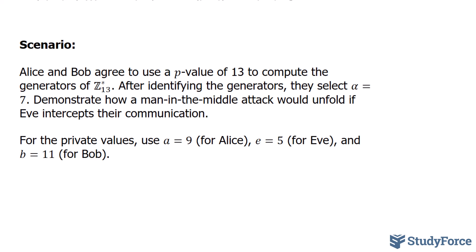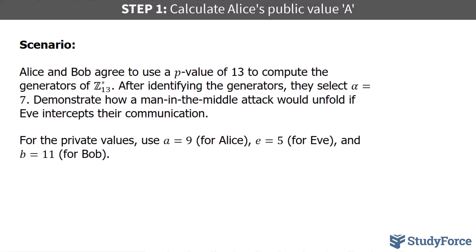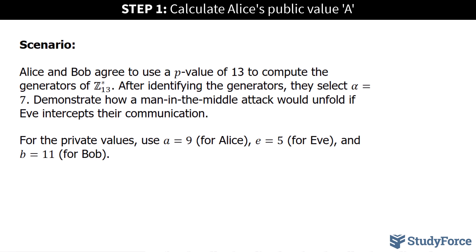For the private values, we'll use 9, 5, and 11 for Alice, Eve, and Bob, respectively. Let's begin with step number one in the algorithm. Recall that Alice will send the value of A to Bob, but Eve intercepts it before it reaches Bob.